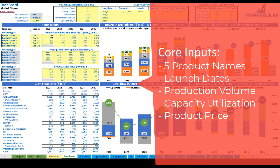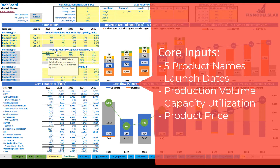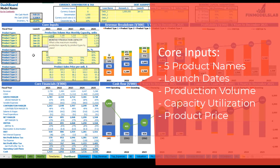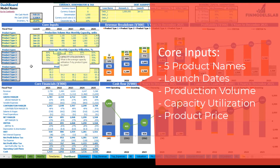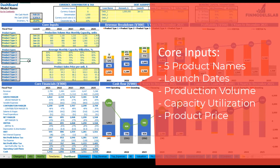You will not always produce at maximum capacity, so there is a monthly capacity utilization percentage by product type and by year. For example, if you put 80%, it means that in 2021 you will produce on average 800 units per month instead of the maximum 1,000 units. This percentage can grow over time — for example, 80%, 82%, 84%, and so on.